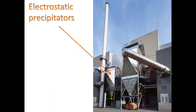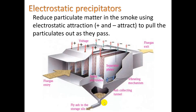Electrostatic precipitators remove particulates. Gases pass through charged plates — alternating positive and negative — creating an electric field between them. Particles are attracted to the plates because of this electric field. The plates are then vibrated, causing particles to fall into an ash-collecting tunnel, from which they go into a storage silo and then to a landfill.